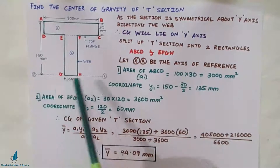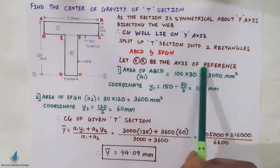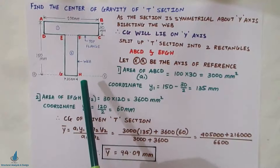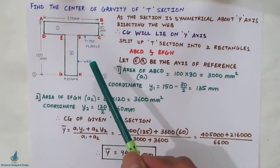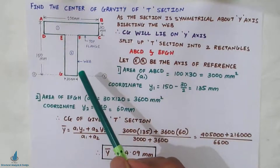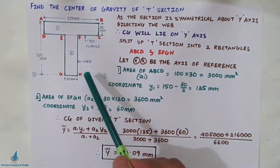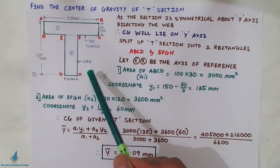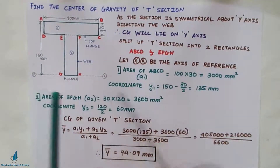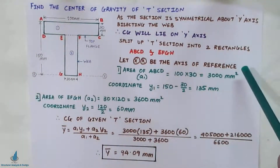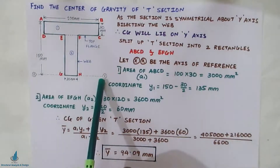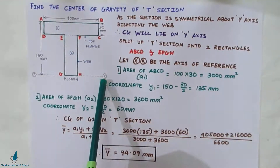I have taken this lowest line of the figure as the axis of reference, that is X-X. If you are calculating about the X-axis — symmetrical about the X-axis, which you will see in the next part of the lecture — you have to take the left-hand side of that particular figure. Here we have taken symmetry about the Y-axis, so the lowest line of the figure is taken as the axis of reference.